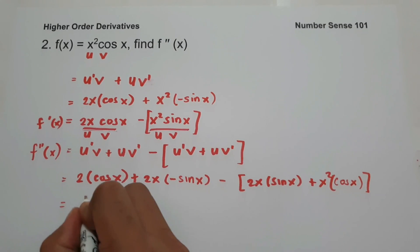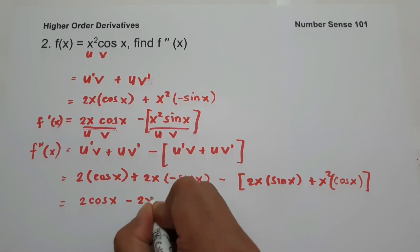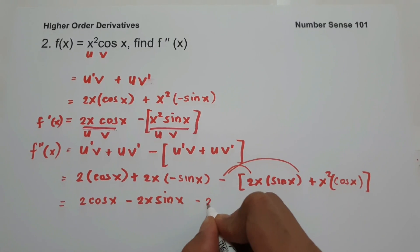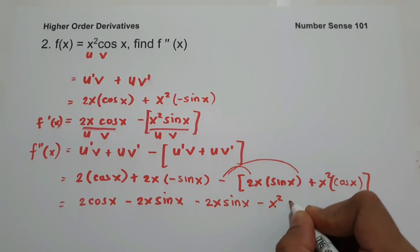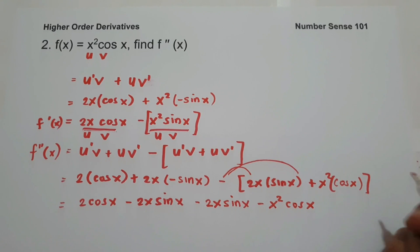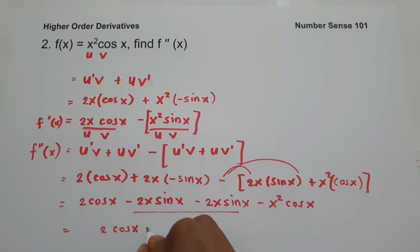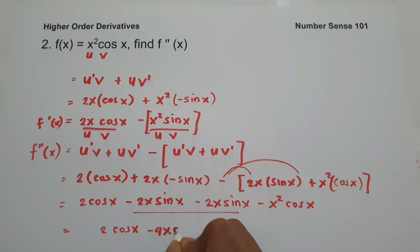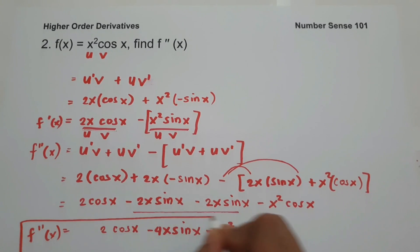To simplify: we have 2 cosine x, and positive times negative gives negative 2x sine x. Then distributing the negative sign gives negative 2x sine x minus x squared cosine x. Combining like terms, we get 2 cosine x minus 4x sine x minus x squared cosine x. This is the second derivative of the given function.